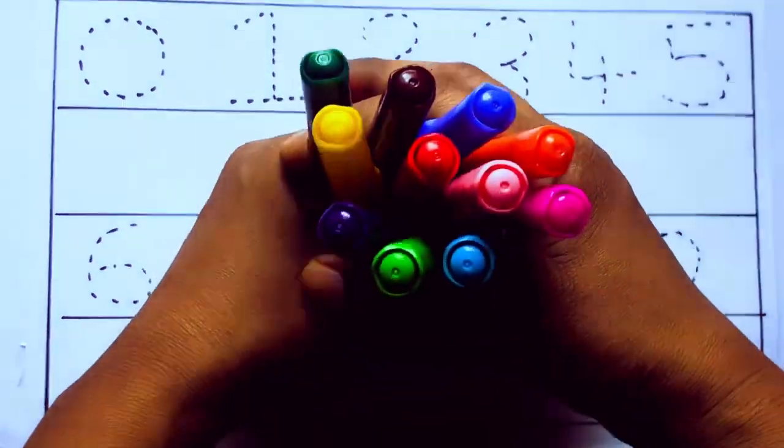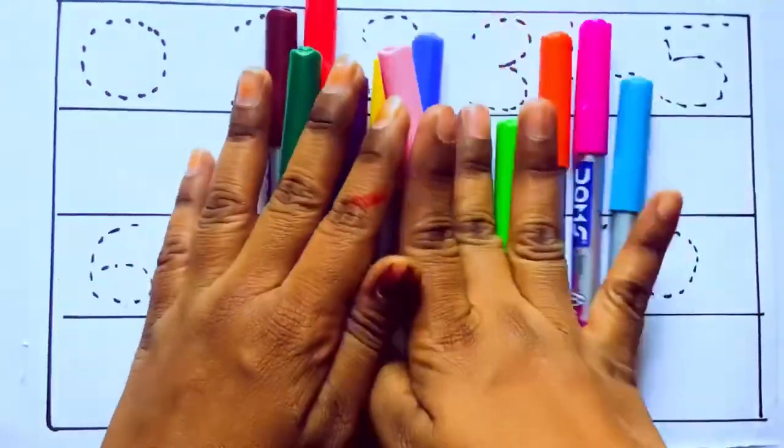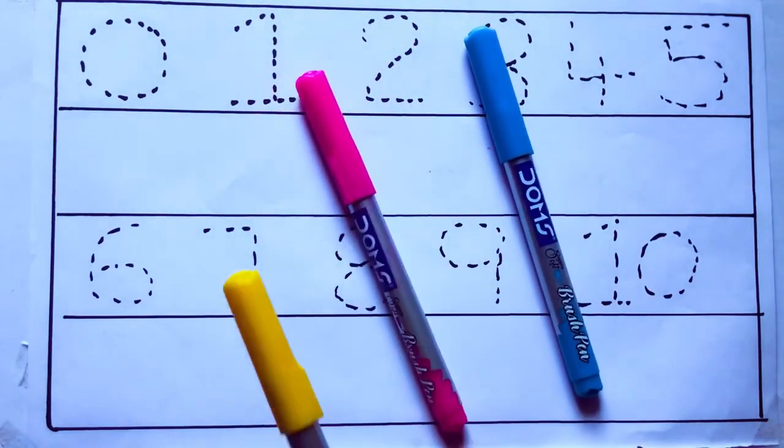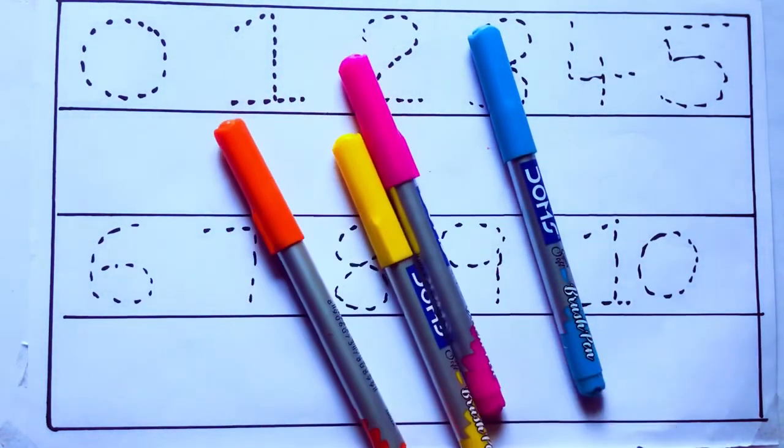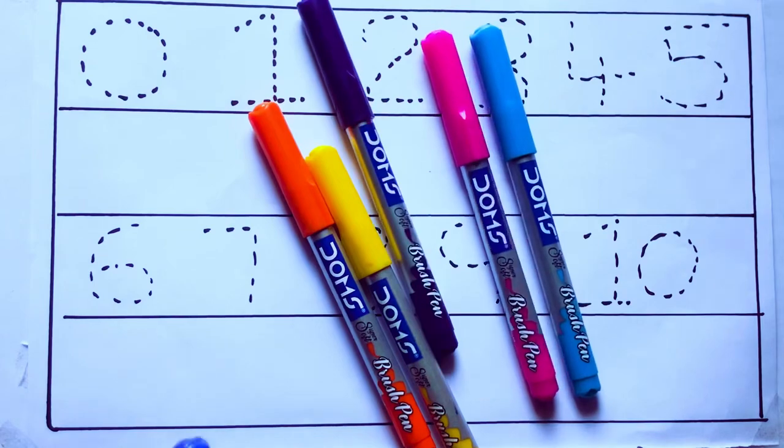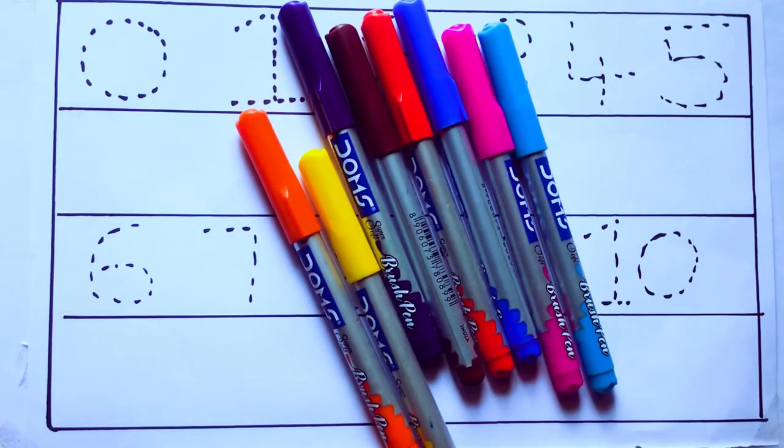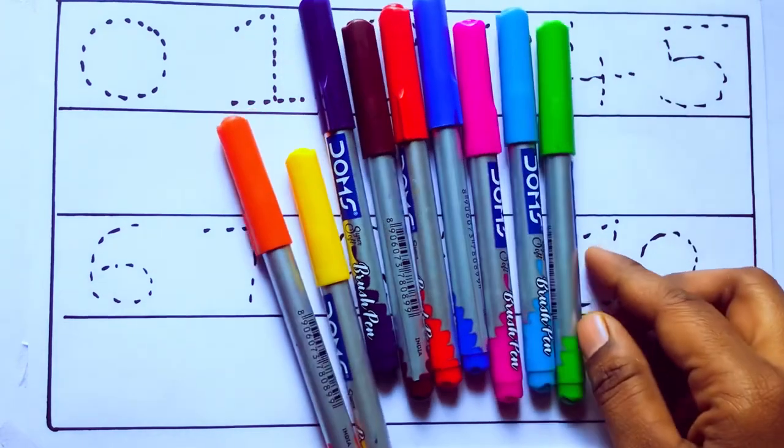Let's learn some colors. These are all the color pencils. Let's learn the names. Sky blue color, pink color, yellow color, orange color, violet color, blue color, brown color, red color, green color.